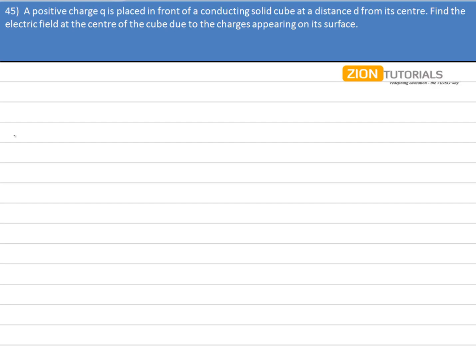A positive charge Q is placed in front of a conducting solid cube at a distance D from its center. Now what we have to calculate is the electric field at the center of the cube due to the charges appearing on the surface.